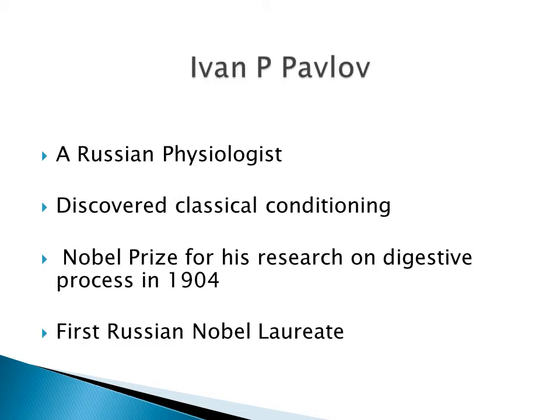Ivan P. Pavlov was a Russian physiologist who discovered classical conditioning. He was the first Russian Nobel laureate to win the Nobel Prize for his research work on the digestive process in 1904.